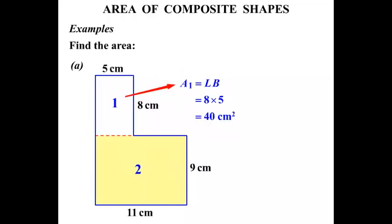Let's concentrate now on this shape. It's a rectangle as well. We'll call this Area 2. Again, because it's a rectangle, equals length times breadth. The length is 11, the breadth is 9. So it equals 11 times 9, and that works out to be 99 square centimeters.